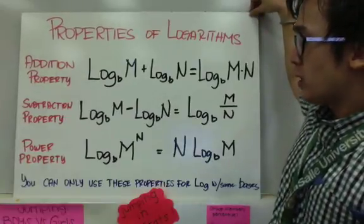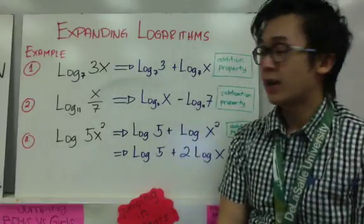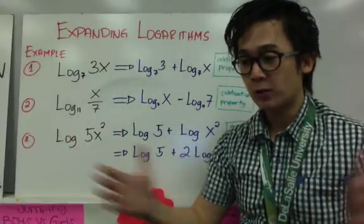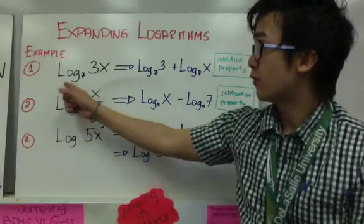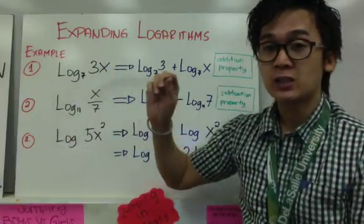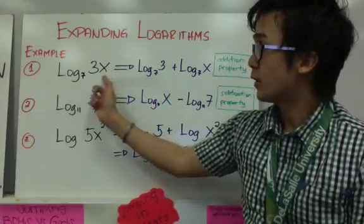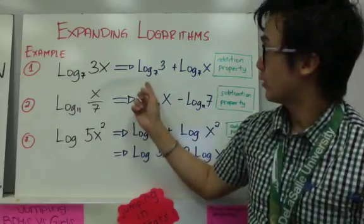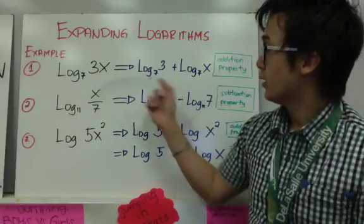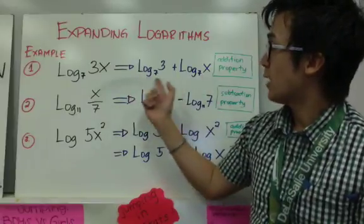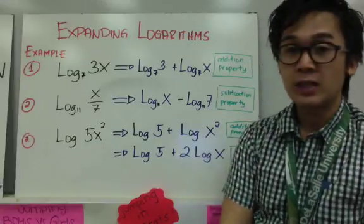One of the applications of the properties of logarithms is expanding a logarithmic expression. For example, we have logarithm of 3x base 7. We can expand it using the addition property. So from logarithm of 3x base 7, it becomes logarithm of 3 base 7 plus logarithm of x base 7. When you expand it, make sure the bases are still the same, since we're using the addition property.